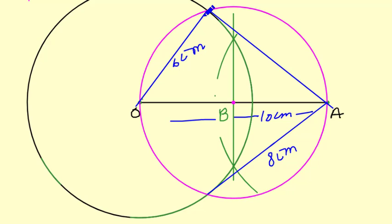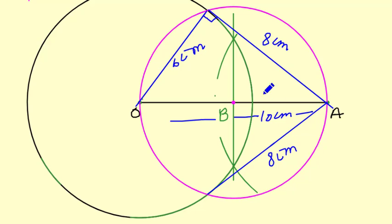You can see this triangle. This angle is 90 degrees. This side is 6 centimeters, and the distance OA is 10 centimeters. We have already calculated the tangent length, which is coming to 8 centimeters. So these are the tangents. Let's label them — this one as T and this one as P. So PA and PT are the required tangents.